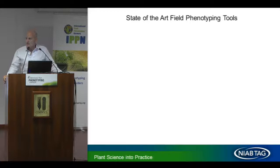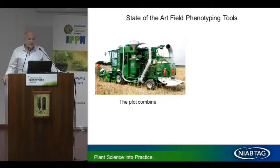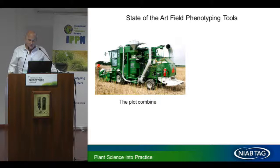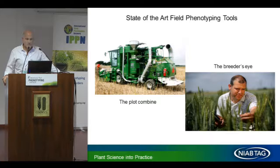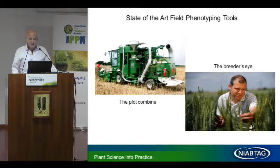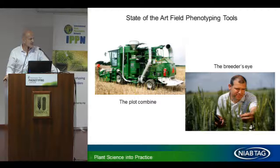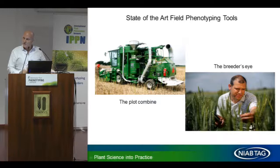Let me introduce our state-of-the-art phenotyping tools. First is a plot combine — a very high-tech, fairly expensive piece of equipment, but indispensable since grain yield is the bottom line for everything. The other key tool is our breeder Phil Howell, who has spent decades looking at millions of wheat plants and can pretty much identify a winner from a loser just by looking at it. We try to reproduce that with machine vision and high-tech sensors, but we're not quite there yet. We're not going to replace either of those, but we want to supplement and make the job easier and faster.